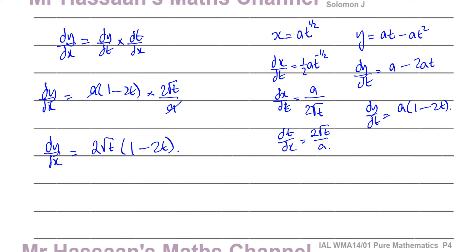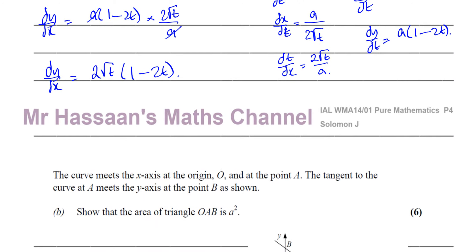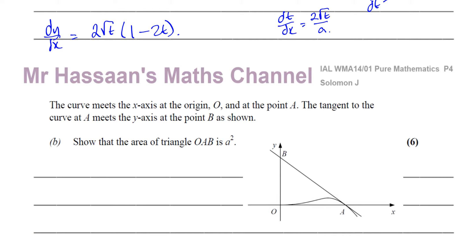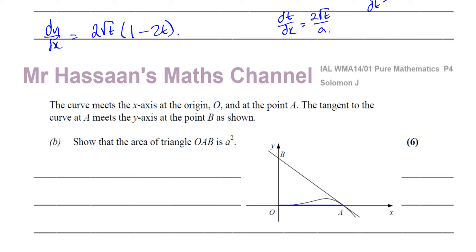Moving on to part b. The curve meets the x-axis at the origin and at the point A. The tangent to the curve at A meets the y-axis at the point B, as shown. We need to show that the area of triangle OAB equals a squared.